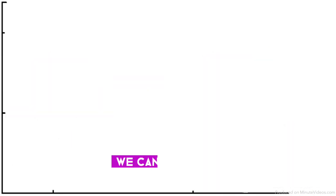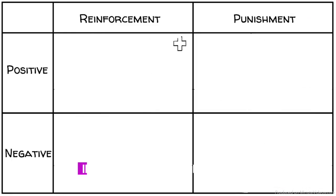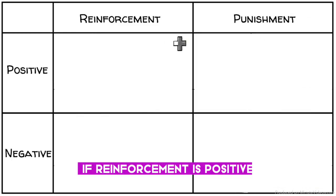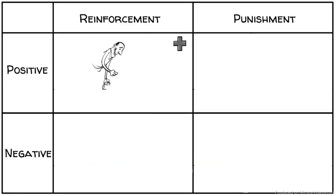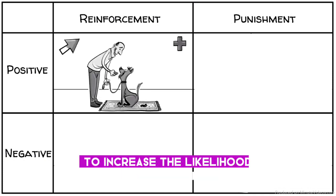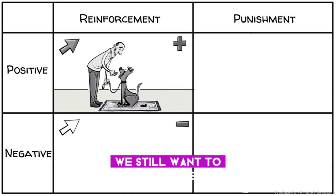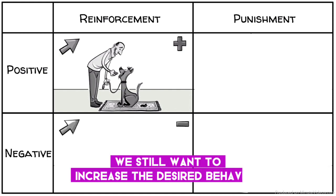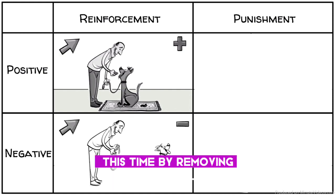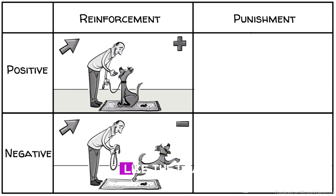We can draw the four options in a table. If reinforcement is positive, we add something pleasant, like a cookie, to increase the likelihood of a behavior. If reinforcement is negative, we still want to increase the desired behavior, this time by removing something unpleasant, like the leash.